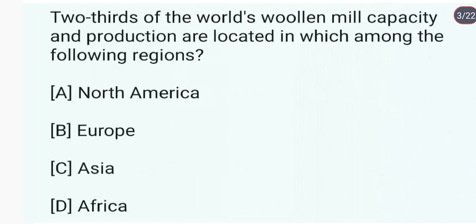Two thirds of the world's woollen milk capacity and production are located in which of the following regions? Two thirds woollen milk capacity and production kahan located hain? Ye located hain Europe mein. Answer is B.